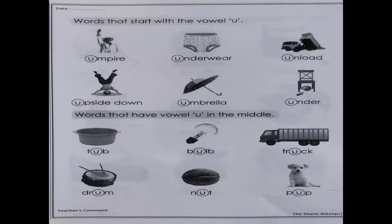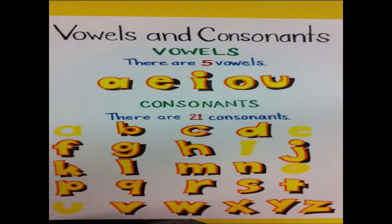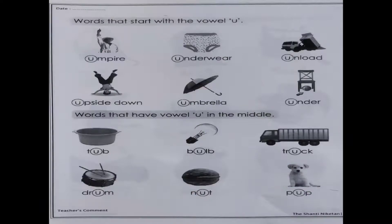Now look at the first picture. First picture ko dekhenge. First picture kiski hai? This picture, where do you see? When you see the ball game cricket, which is six or four or player out, who tells you? Umpire. Koon batata hai? Umpire. So yuh picture kiska hai? Umpire. Next is an underwear.